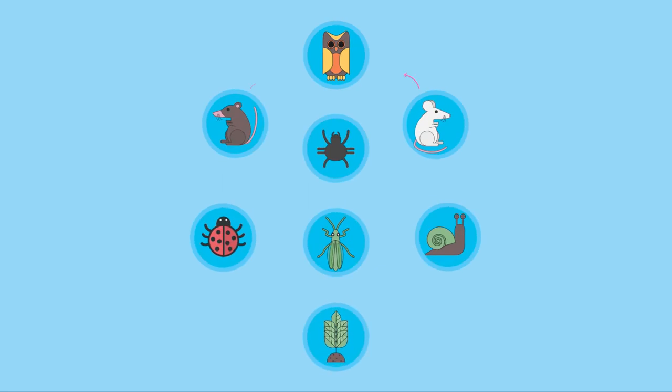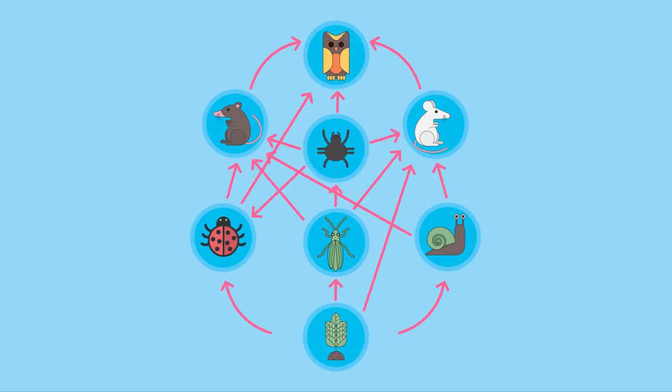So let's take the food web of a woodland environment as an example. This food web is the combination of 11 different food chains, so we can start to see how the species are interdependent on one another.